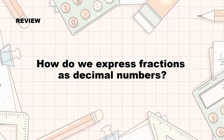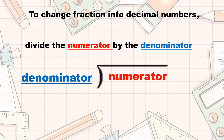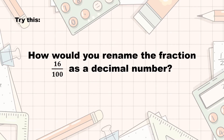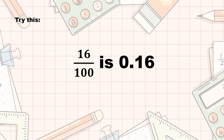For the second question, how do we express fractions as decimal numbers? To change a fraction into decimal numbers, divide the numerator by the denominator. How would you rename the fraction 16 hundredths as a decimal number? 16 over 100 in decimal numbers is expressed as 0.16, or 16 hundredths.